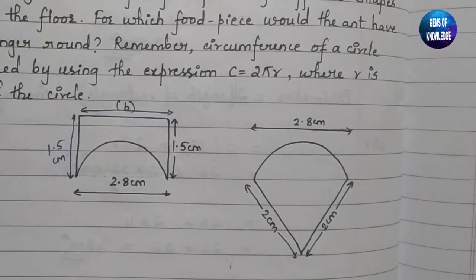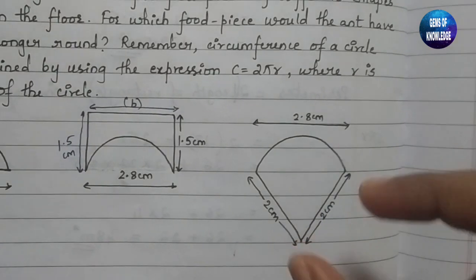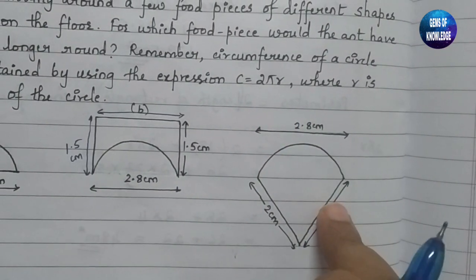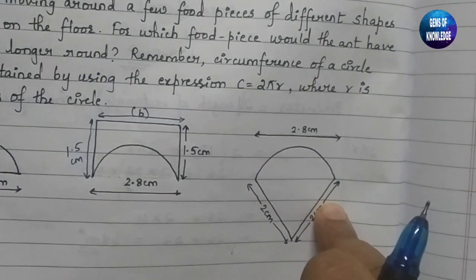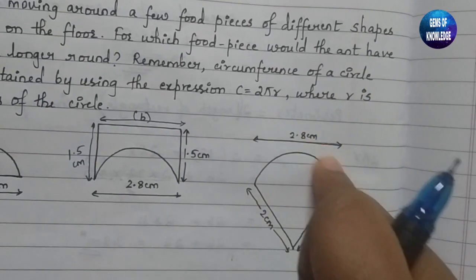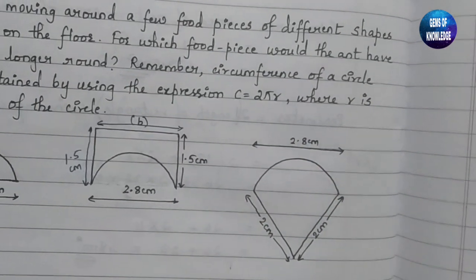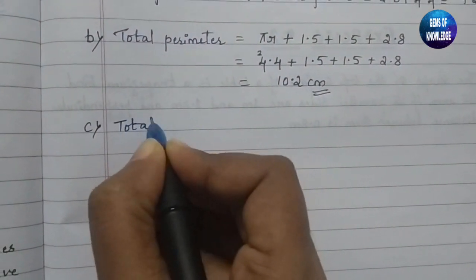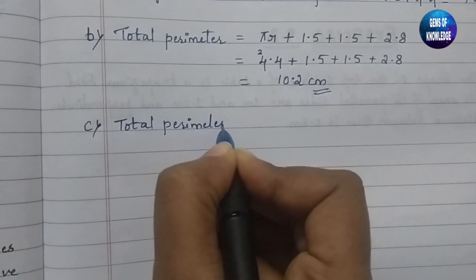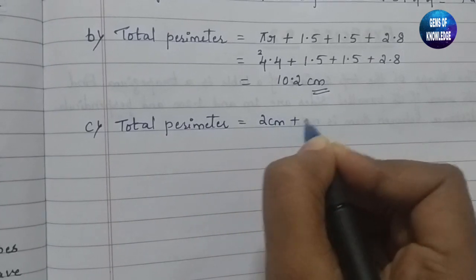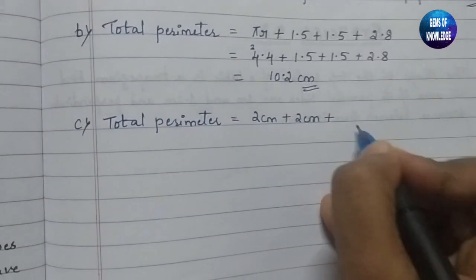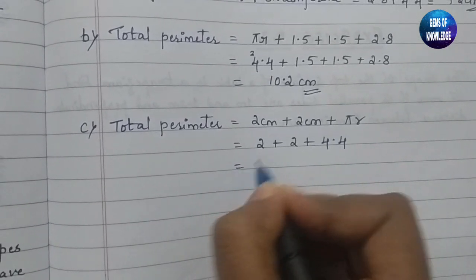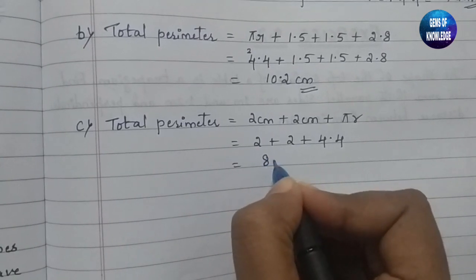Now figure C has three parts: two straight sides and an upper semicircle. The two sides are each 2 cm. Again, the semicircle perimeter is 4.4 cm. So the total perimeter for figure C equals 2 cm plus 2 cm plus 4.4, which gives 8.4 centimetres.